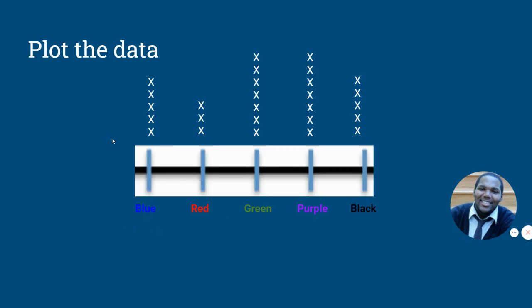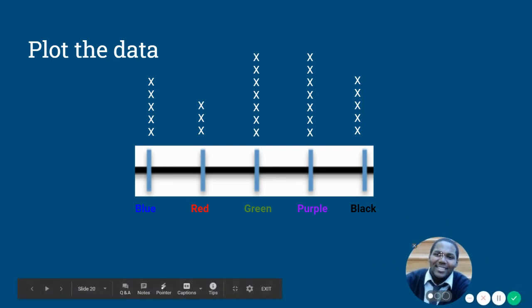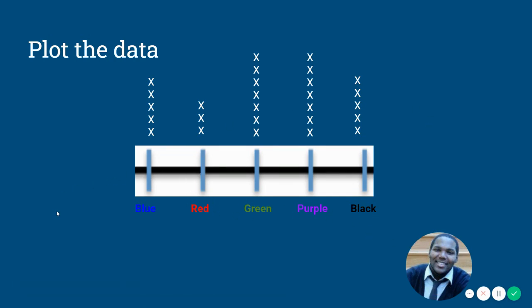Let's plot this data on a line plot. And we've already done this before. But I wanted you to see it again, how this information connects and how it looks when we pull it from the data chart onto a line plot. And so we see our frequencies have not changed. Blue is five. Red is three. And green and purple are both seven. And black is five also.